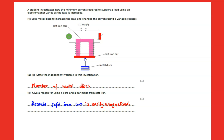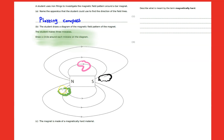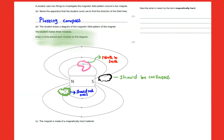We use a plotting compass to find the direction of the magnetic field. We need to identify mistakes: the field lines should not cross each other at any given point.